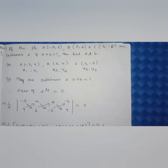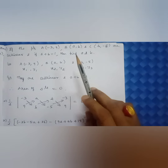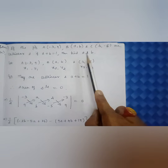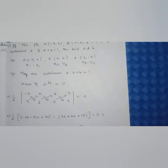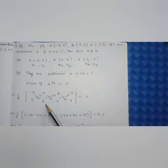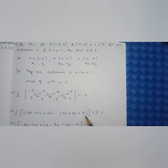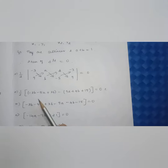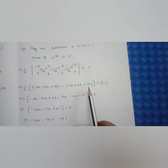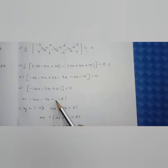Seventh question: if points A(−3, 9), B(a, b), and C(4, −5) are collinear, and a + b = 1, find a and b. Since they are collinear, the area of the triangle equals zero. Setting up: half × | (−3)(b) + (a)(−5) + (4)(9) − (9)(a) − (4)(b) − (−5)(−3) | = 0. Expanding: −3b − 5a + 36 − 9a + 4b + 15 = 0 (the minus sign is taken inside). This simplifies to −14a − 7b + 21 = 0, or −14a − 7b = −21.